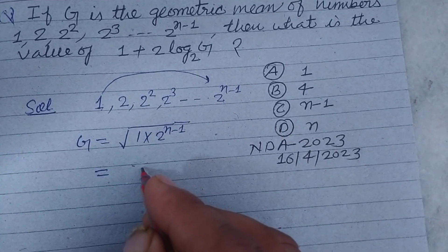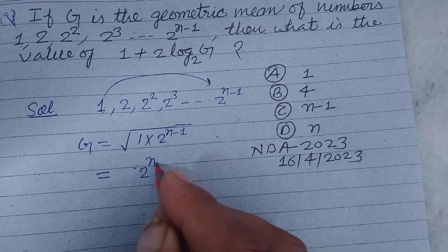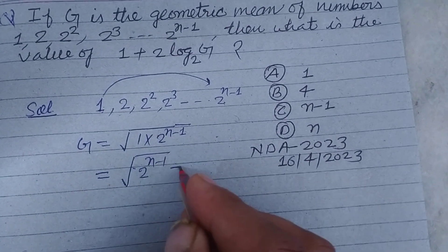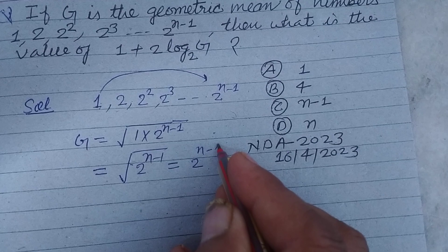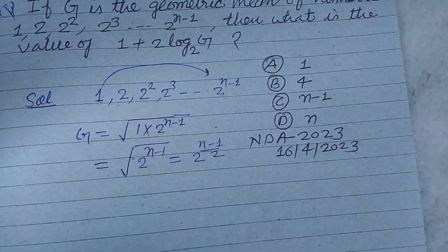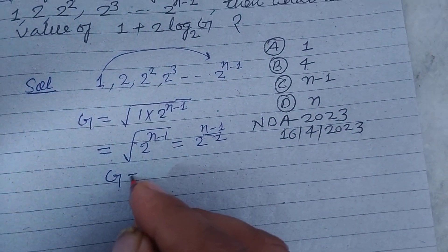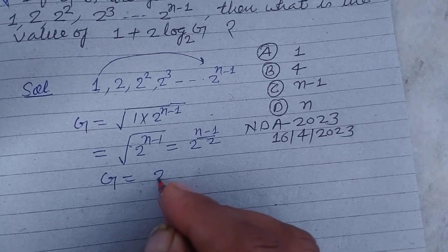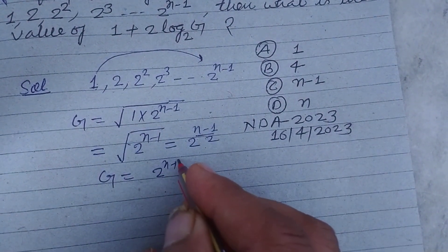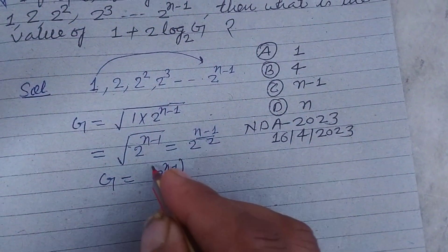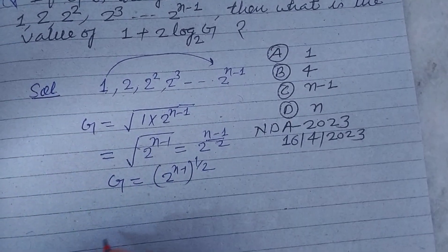So this will be 2 to the power n minus 1 under root, and you know that value of under root is n minus 1 by 2. So G is 2 to the power n minus 1 to the power 1 by 2.